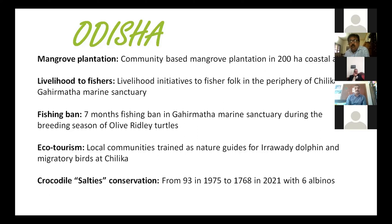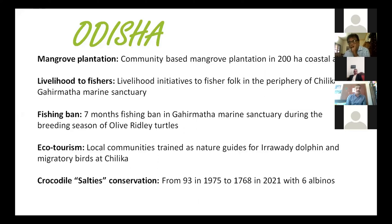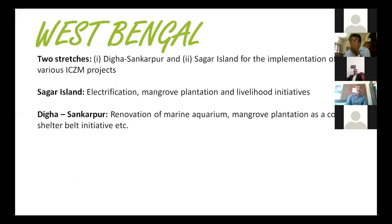Odisha also has a successful saltwater crocodile (Crocodylus porosus) conservation program at Bhitarkanika forest area. Since its initiation in 1975 with FAO funding, the population has grown to 1,768 individuals including six albino crocodiles — which are very rare. This is probably one of the best solid crocodile populations in Southeast Asia.